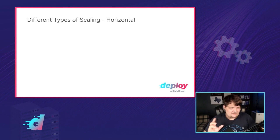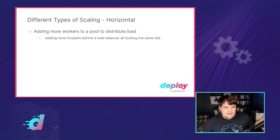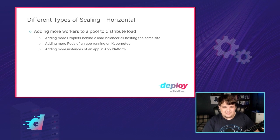Those two different types of scaling have different names. The first is horizontal scaling, which is adding more workers to a pool to distribute the load. This means adding more droplets behind a load balancer, adding more pods in a Kubernetes cluster, or adding more app deployments inside of App Platform — adding more workers to do the work and ensure you can handle the load.